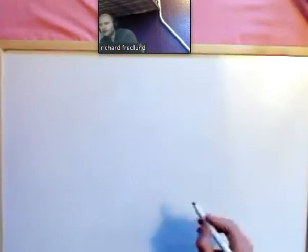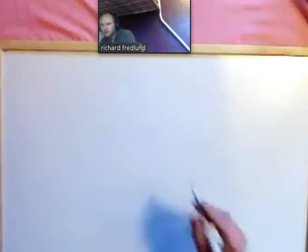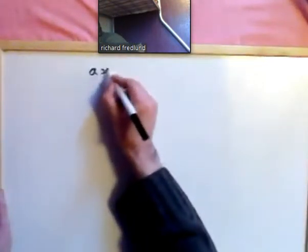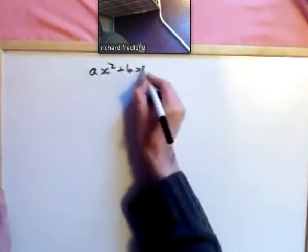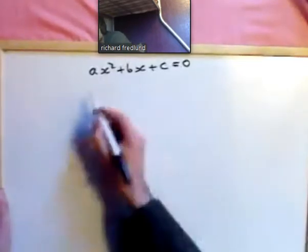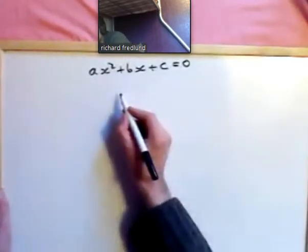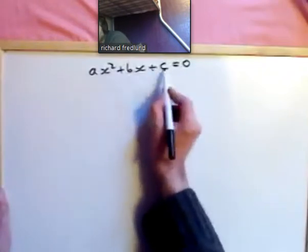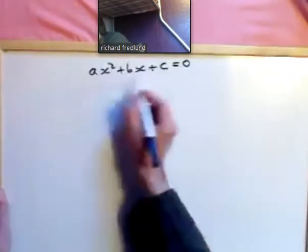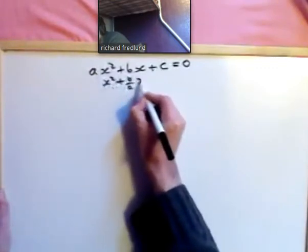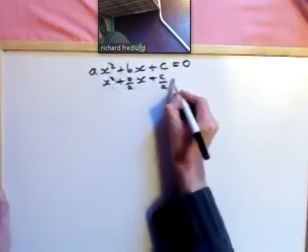Here we're going to solve the quadratic equation ax squared plus bx plus c equal to zero. We realize that we've got three coefficients, but we can actually turn this into just two coefficients by dividing by a. So, x squared plus b over ax plus c over a equals zero.